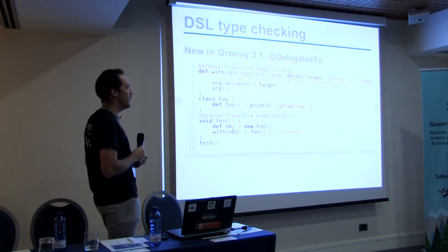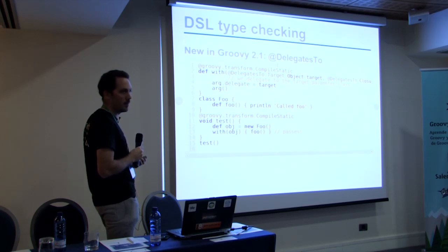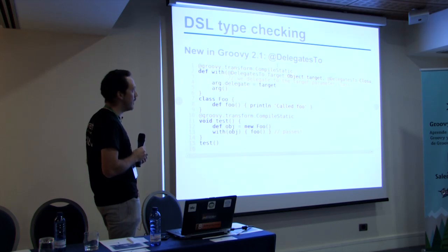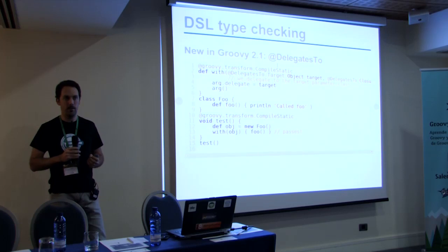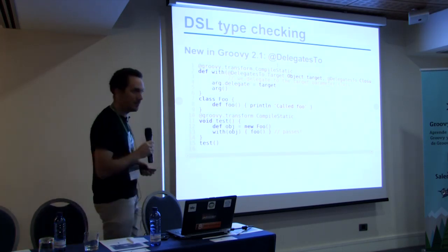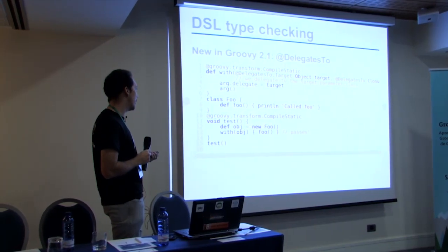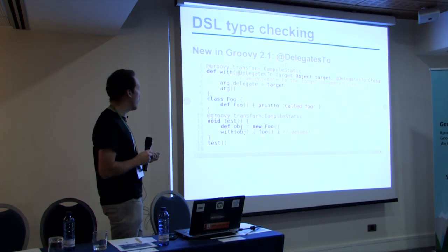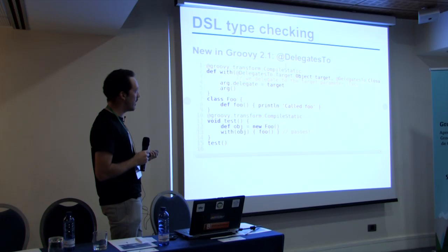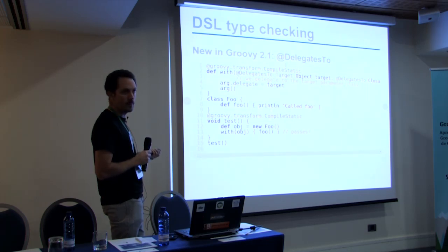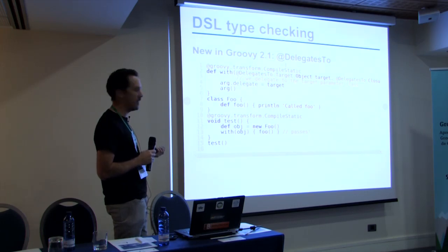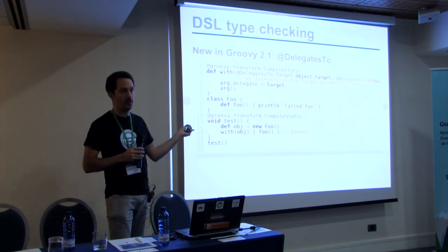Here I'm using @DelegatesTo but not specifying a type — I'm specifying a parameter whose type is Object. Yet it still passes compilation because of flow typing. In Groovy's type checking, flow typing means that at a certain point the compiler knows that in ops we have a Foo. When it finds the method call, it checks @DelegatesTo, finds the target, and says: you're calling this with a Foo, and foo exists on the Foo class — so this passes static compilation.